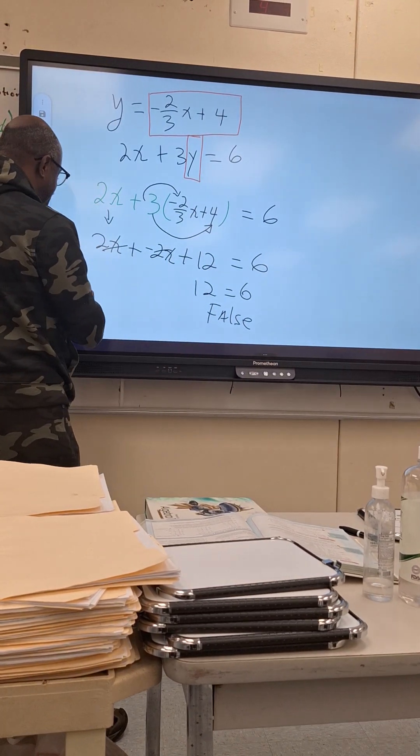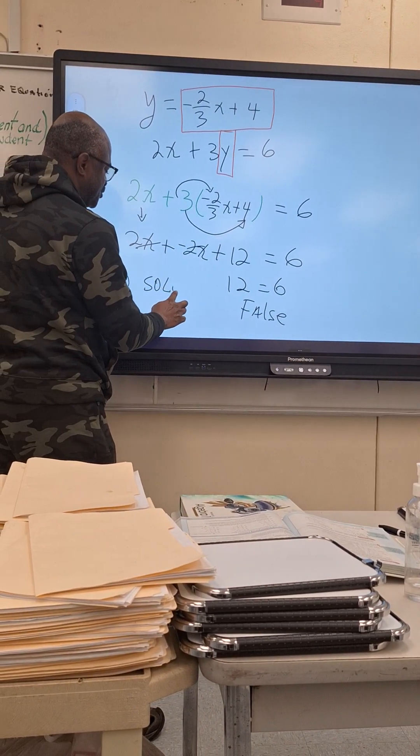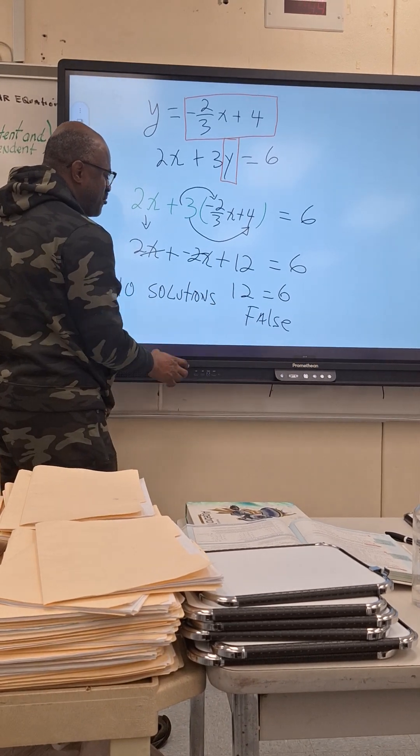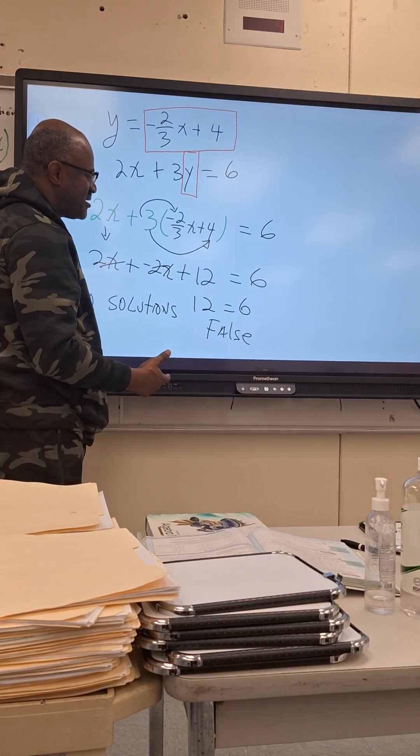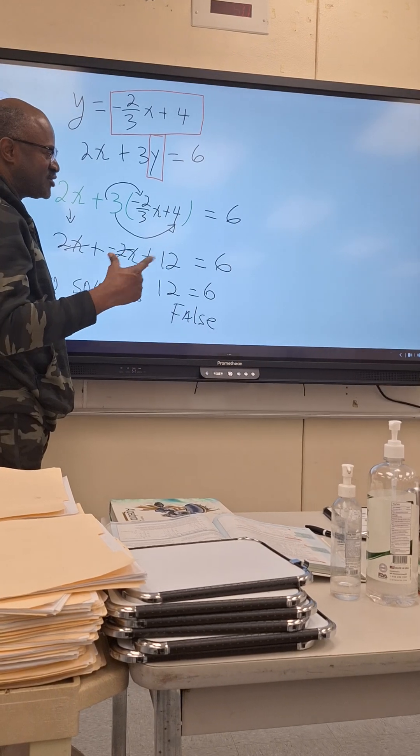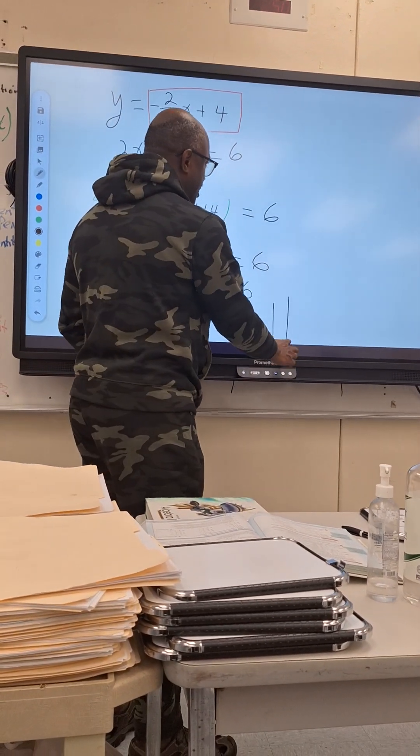There will be no solution. So let's justify why there is no solution. When there is no solution, the lines must be what? Same slope, same slope but what? Different y intercept. What property is that when you have same slope different y intercept? Parallel. They will be parallel. Exactly. So let's see that.